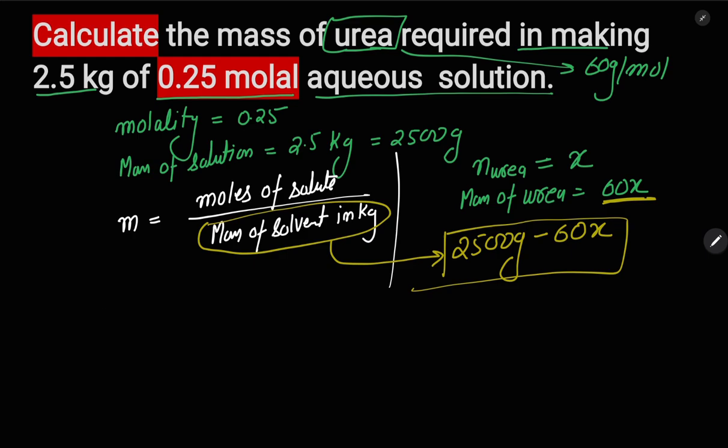The molality was 0.25 equals number of moles of urea, which we assumed to be x, divided by mass of solvent which is 2500 minus 60x. Since this is in grams, we need to multiply by 1000 on the upper side.